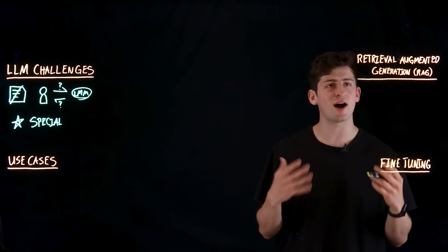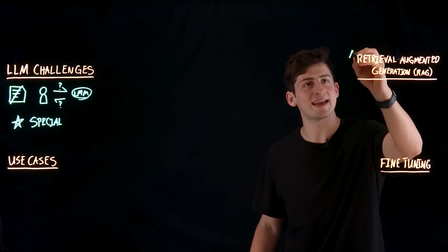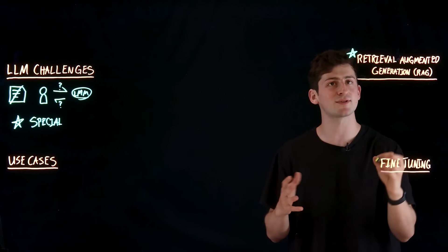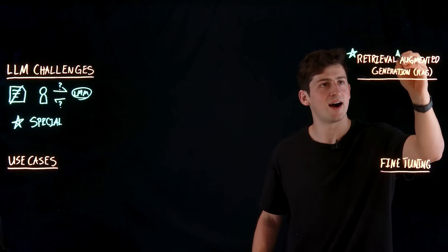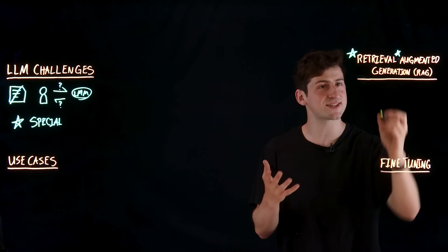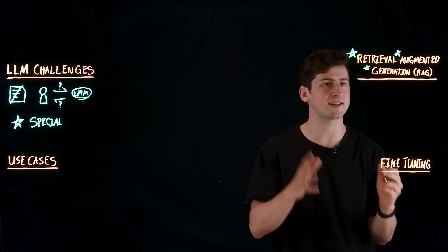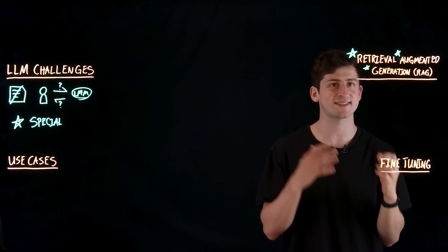So let's begin with retrieval augmented generation, which is a way to increase the capabilities of a model through retrieving external and up-to-date information, augmenting the original prompt that was given to the model, and then generating a response back using that context and information.